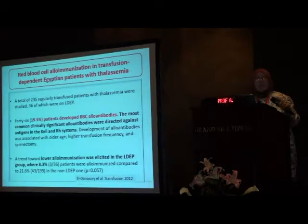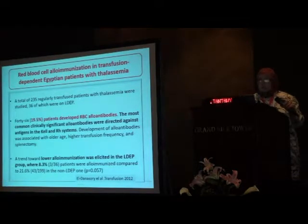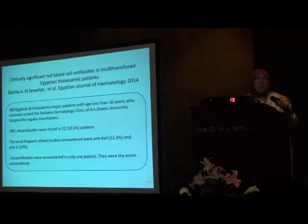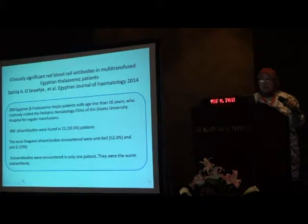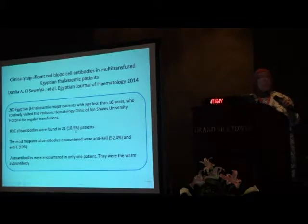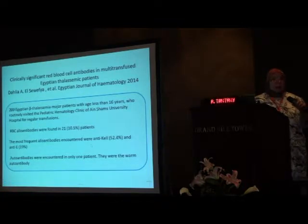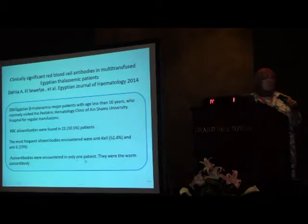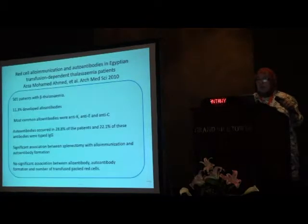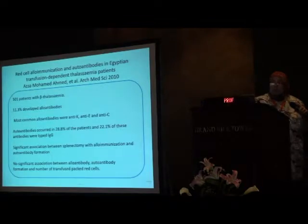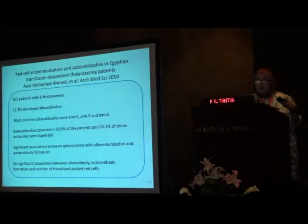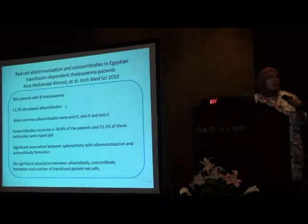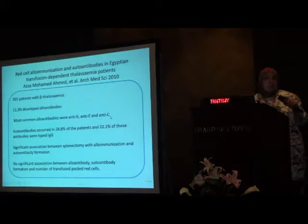This was published in 2012. Another paper published later in 2014 from the same center found red cell alloantibodies in 10.5%, with anti-Kell and anti-E of the RH system being the most common. Auto-antibodies in this study were found in only 1 out of 200 patients, so auto-antibodies are less frequent.